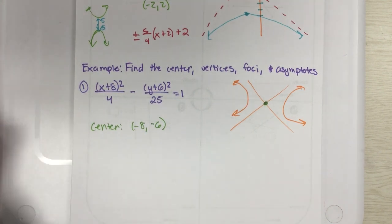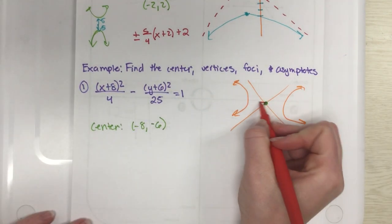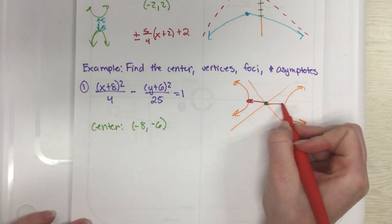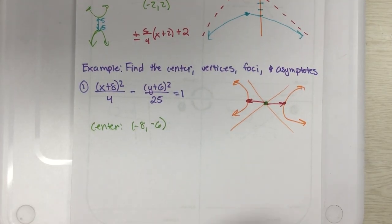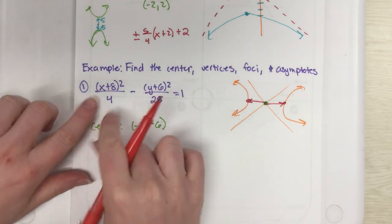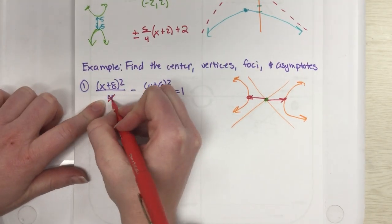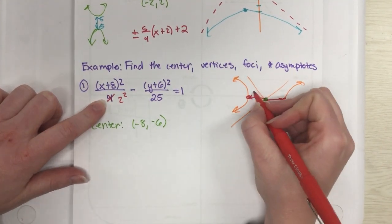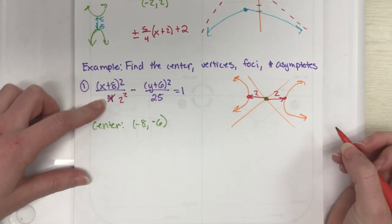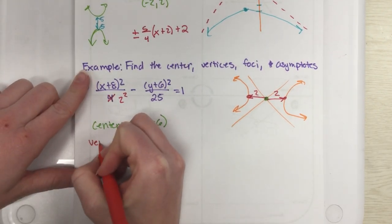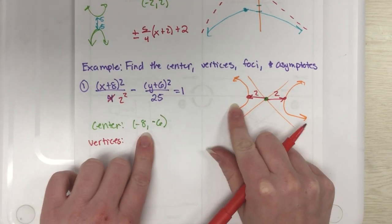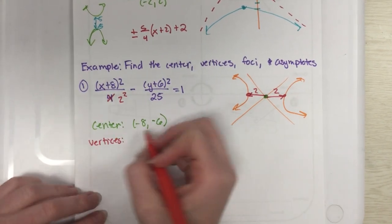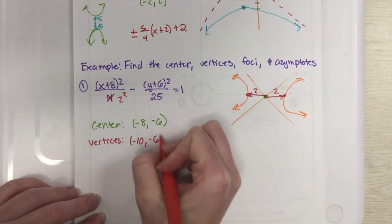All right, so to find the vertices, all we want to do is go this way to find that vertex, and that way to find that vertex. So if I'm going left and right distance, I'm looking underneath my x. I have 4, but really that's just 2 squared, so we are going to go left and right 2. So, for my vertices, I'm going to start at negative 8 and go left 2, so if I go back 2 on my number line, I'd get to negative 10, negative 6.